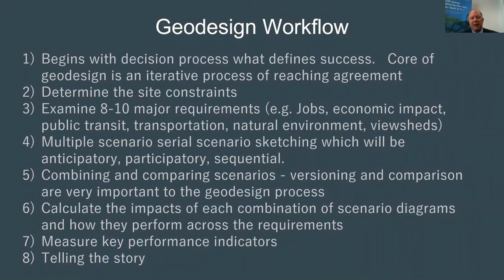The first step is determining site constraints — flood zones, areas attractive or unattractive to business. Those are no-growth areas where development won't occur, and they typically apply across all scenarios. Then you look at eight to ten major requirements — a sweet spot — which can vary from project to project. Examples include public transit, jobs, economic impact, natural environment characteristics, and view sheds and shadows cast by buildings or vegetation.